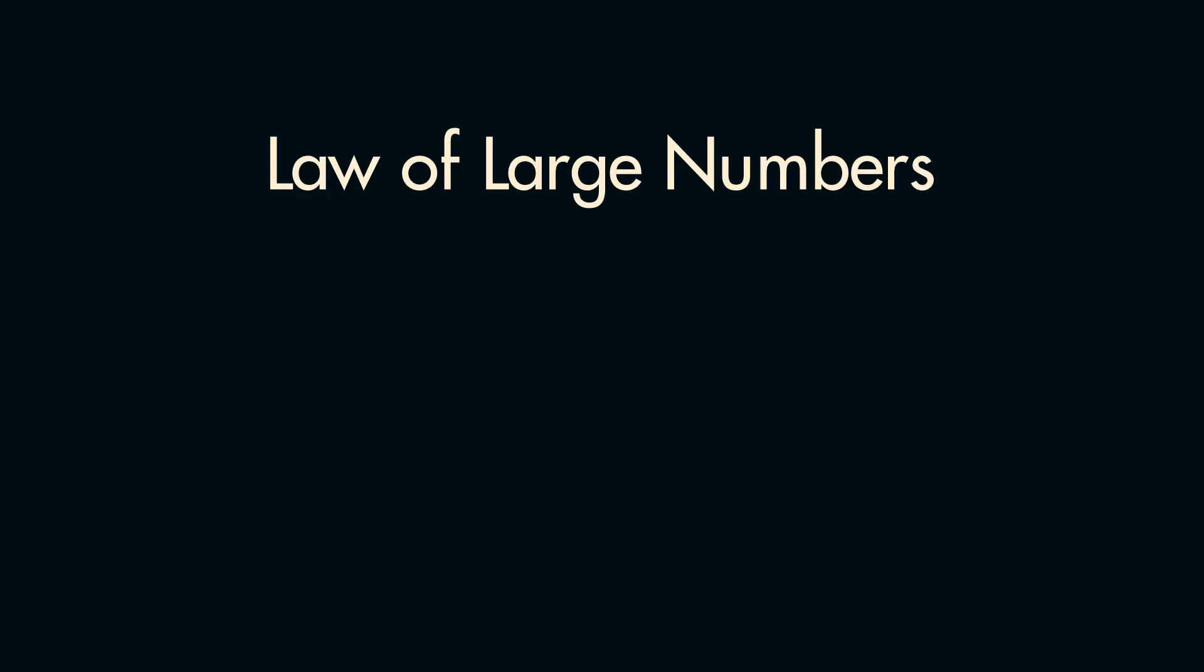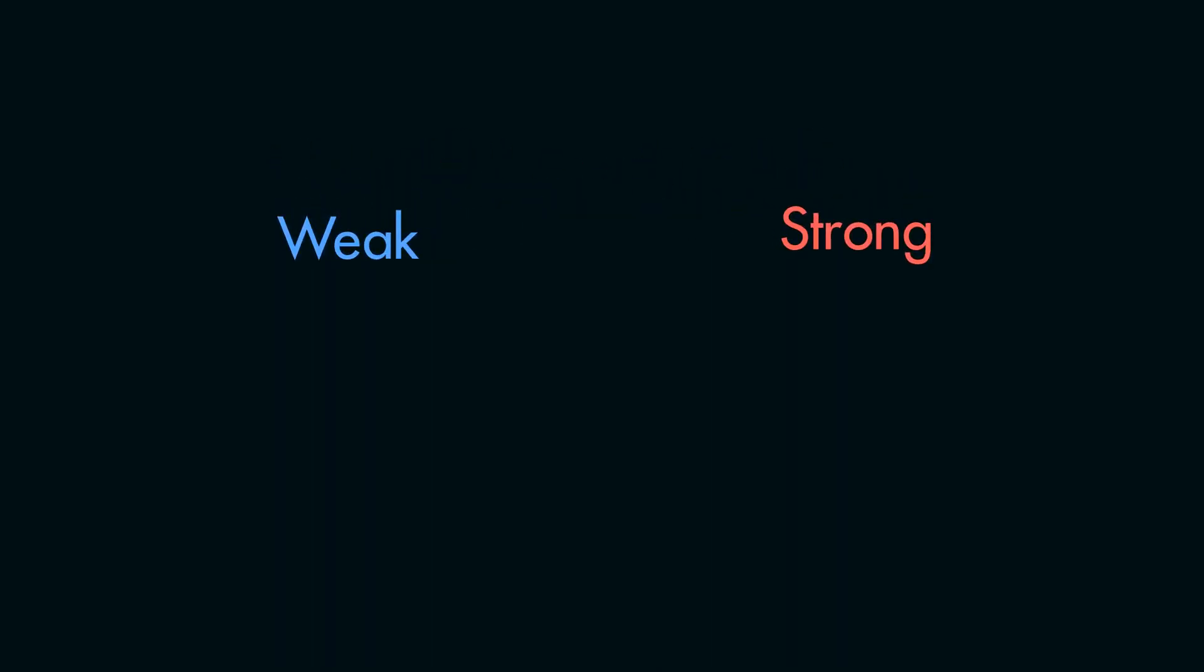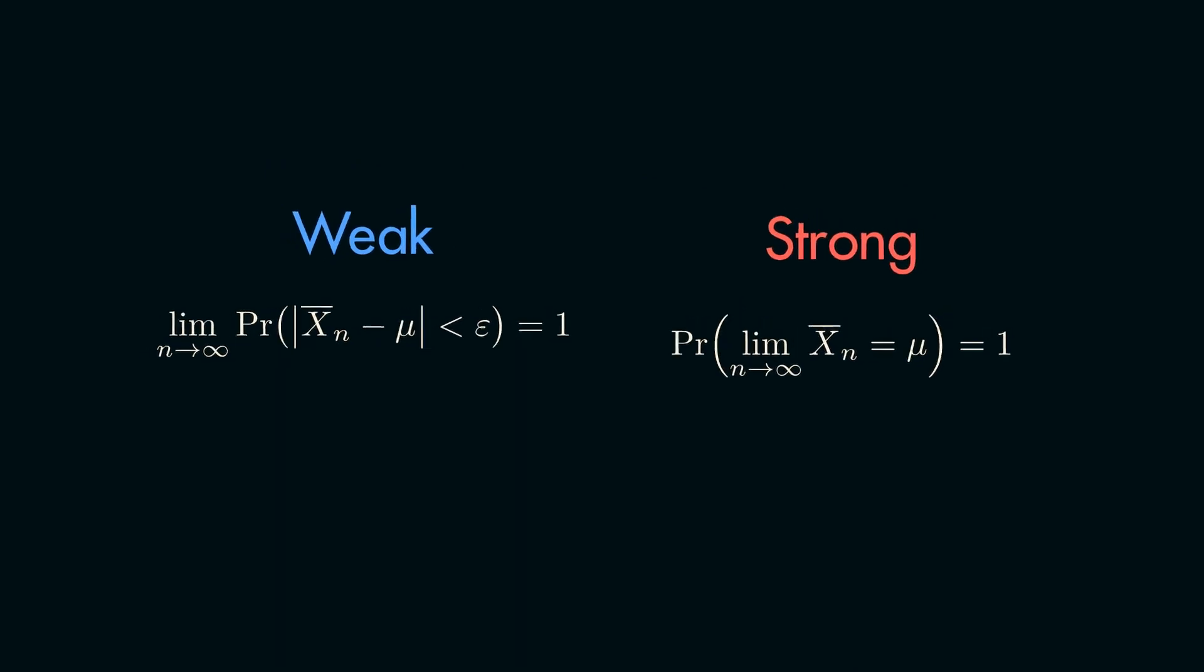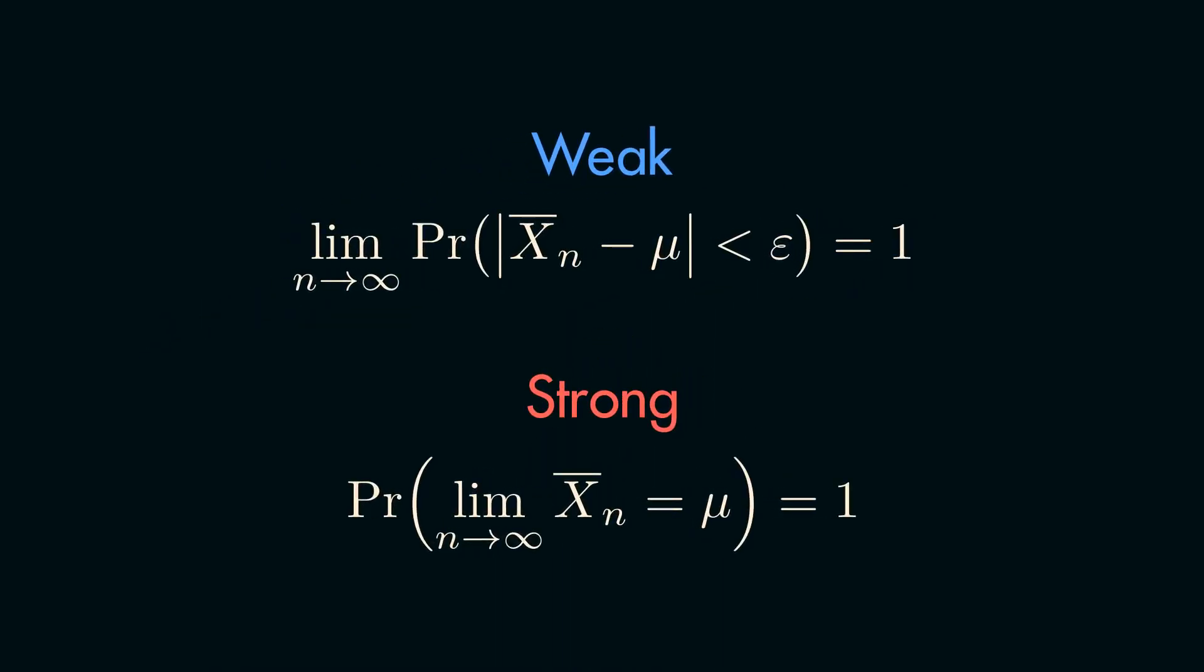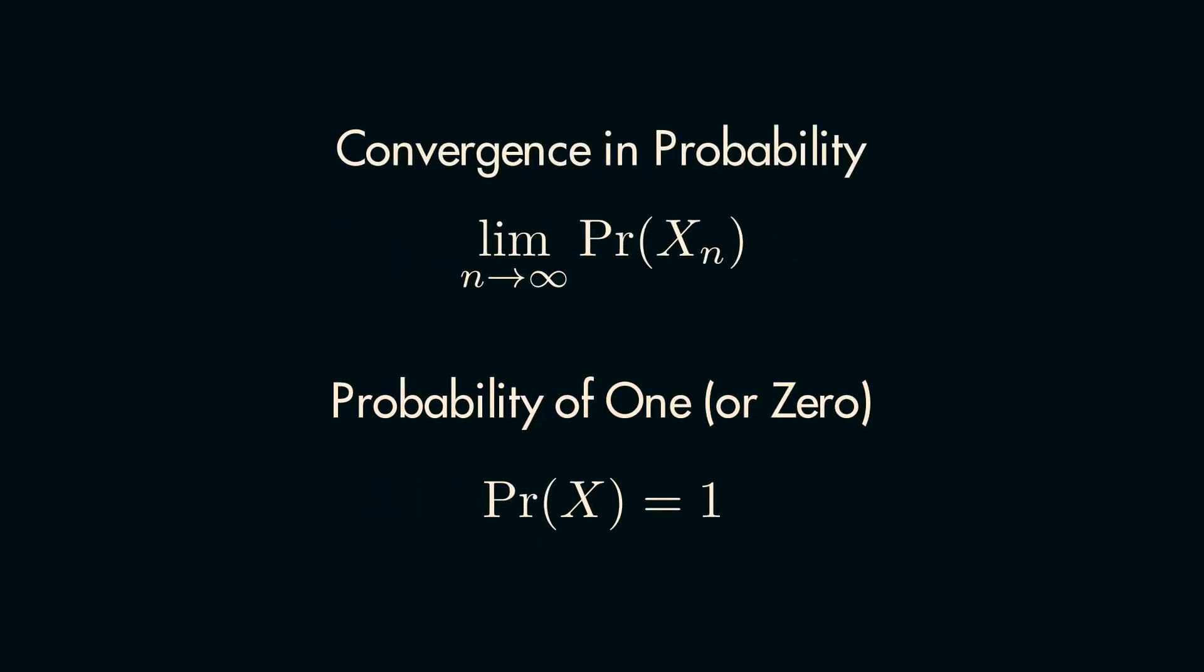However, there's actually a bit more nuance with this idea than you may initially realize, and this is captured in the fact that there's actually two versions of the law of large numbers, strong and weak. Going through the differences of these laws also reveals two interesting concepts: what it means for something to converge in probability, and what probability of one actually means in statistics.